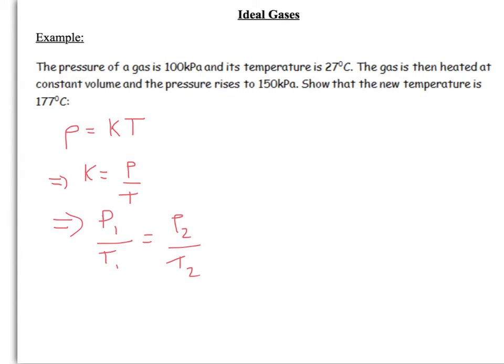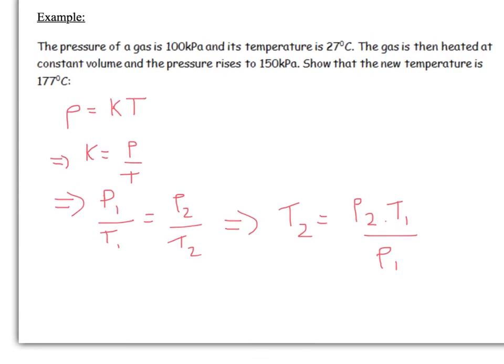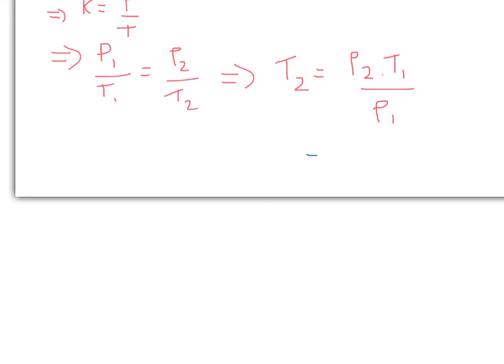We are looking to calculate the temperature after, so let's do that. Temperature after is going to be pressure times by the initial temperature, and then divide that by your initial pressure. We can put these numbers in. We've got your second pressure, 150 times 10 to the 3. And this is the point where we need to do our Kelvin conversion.